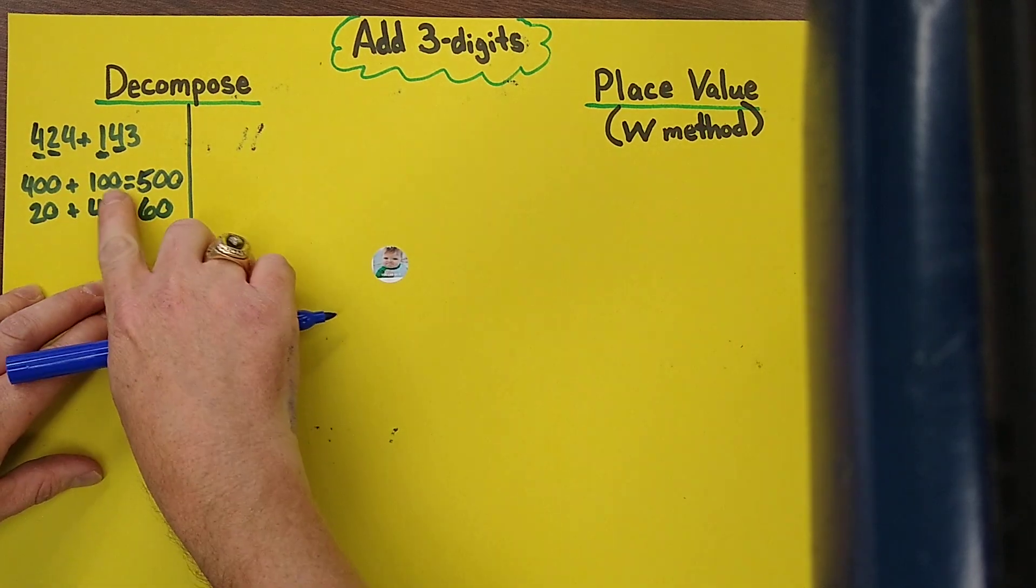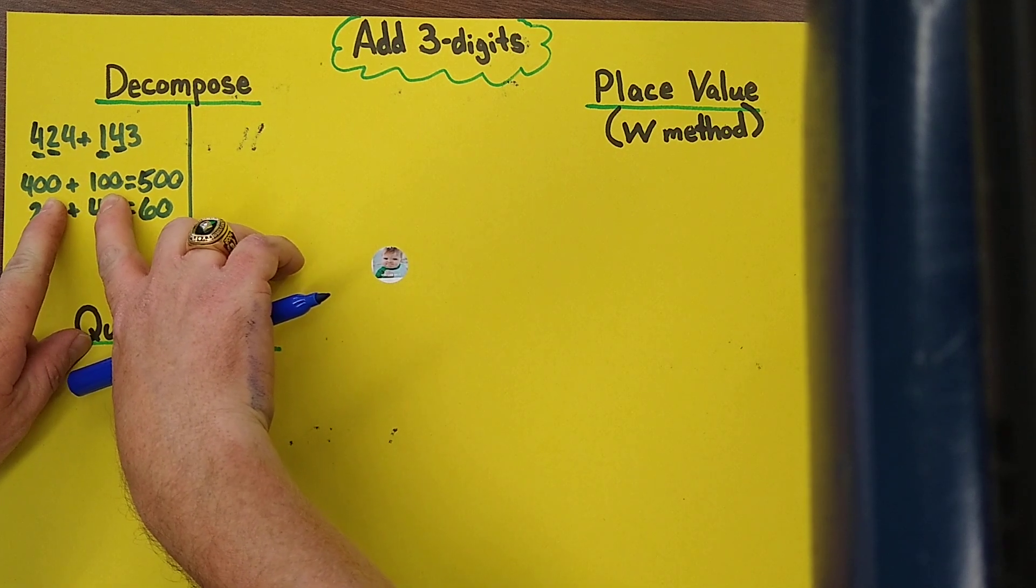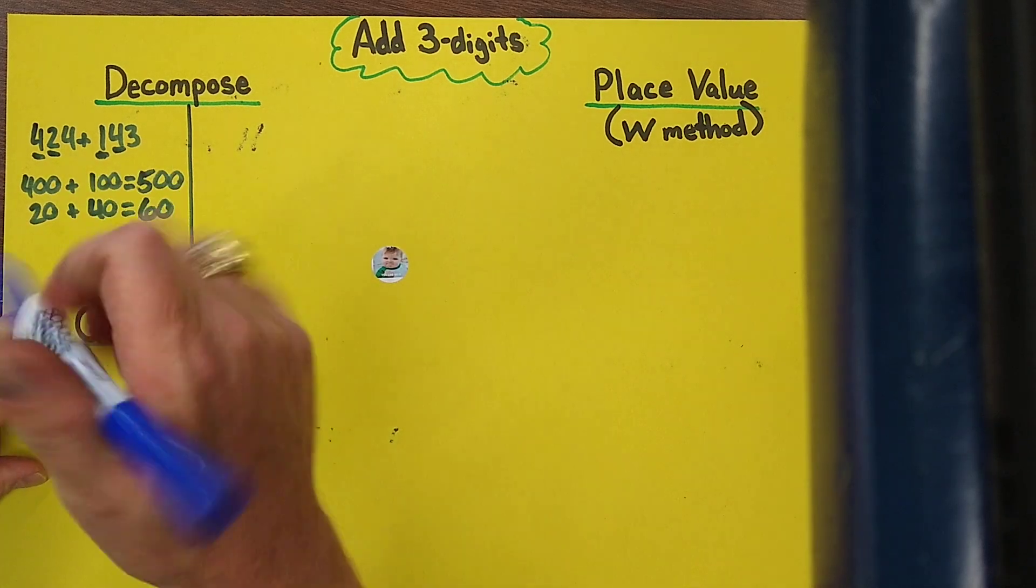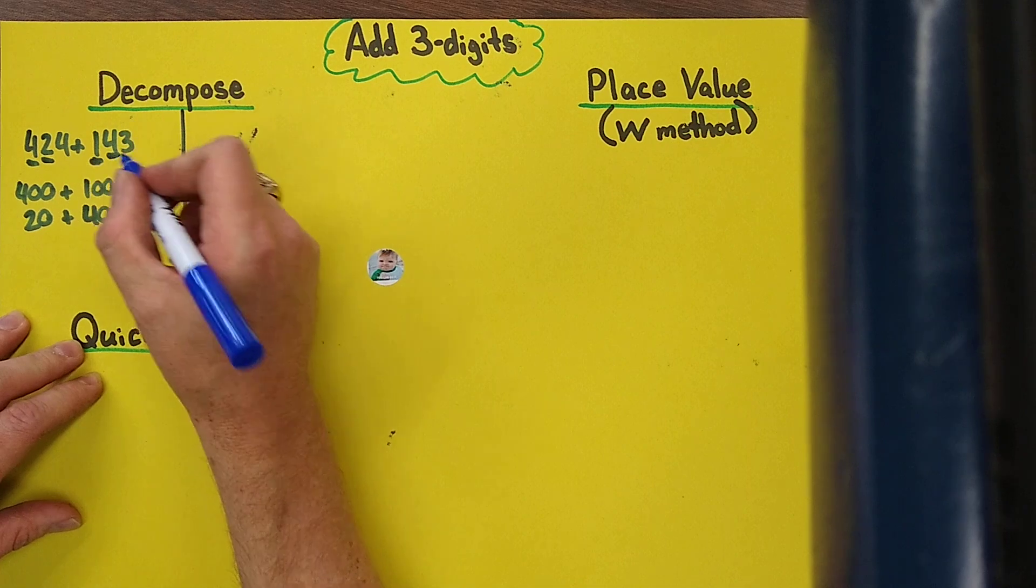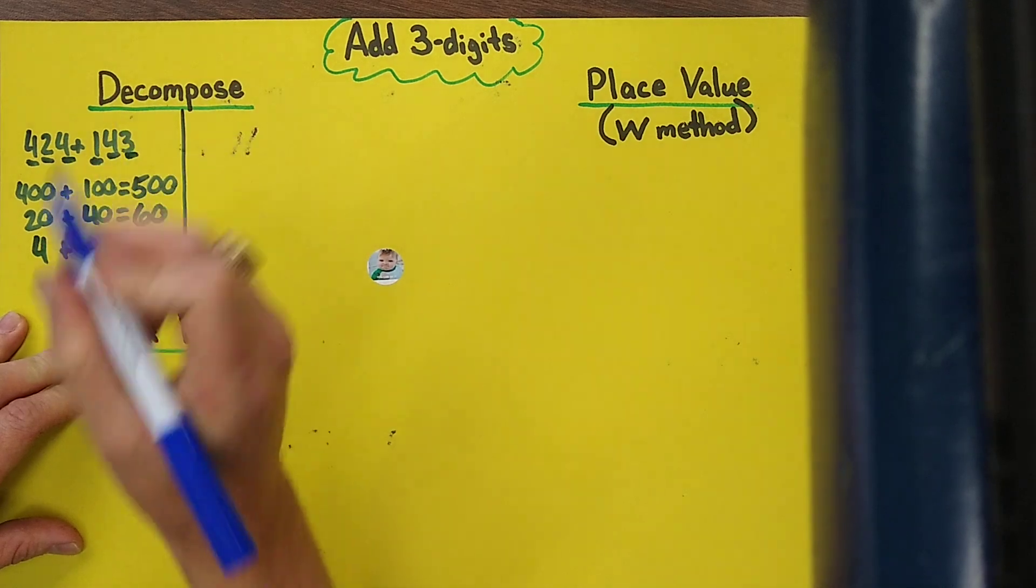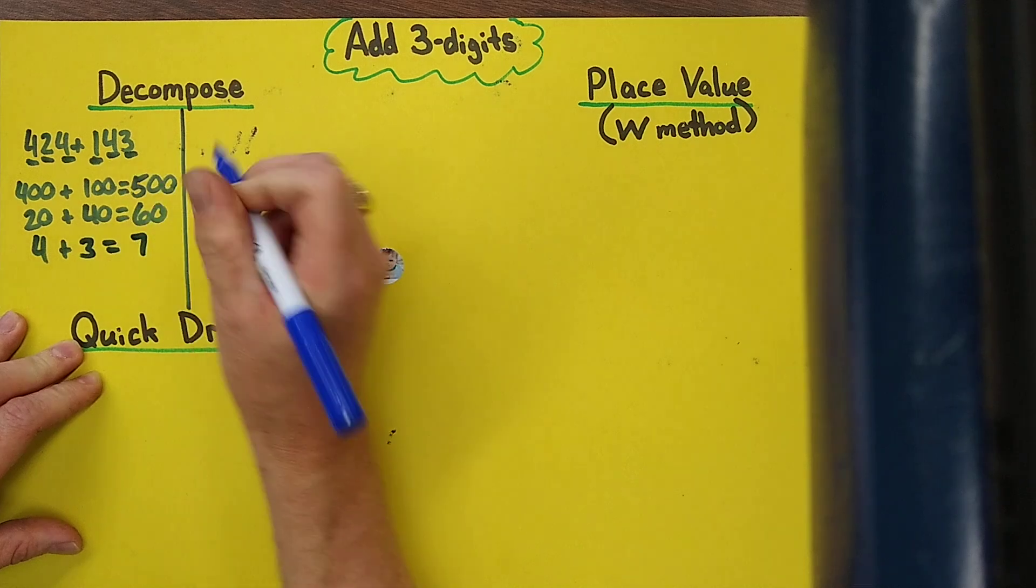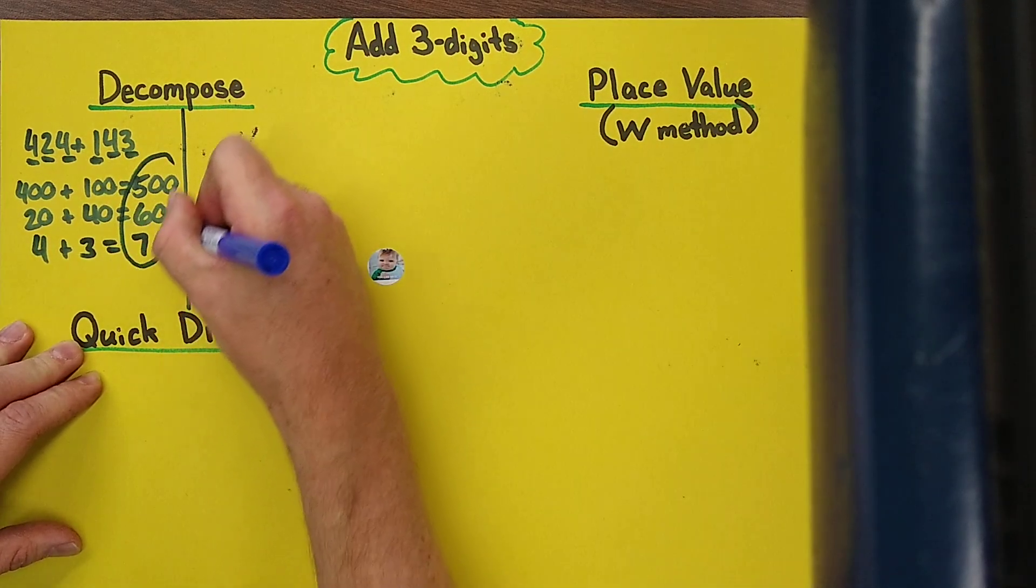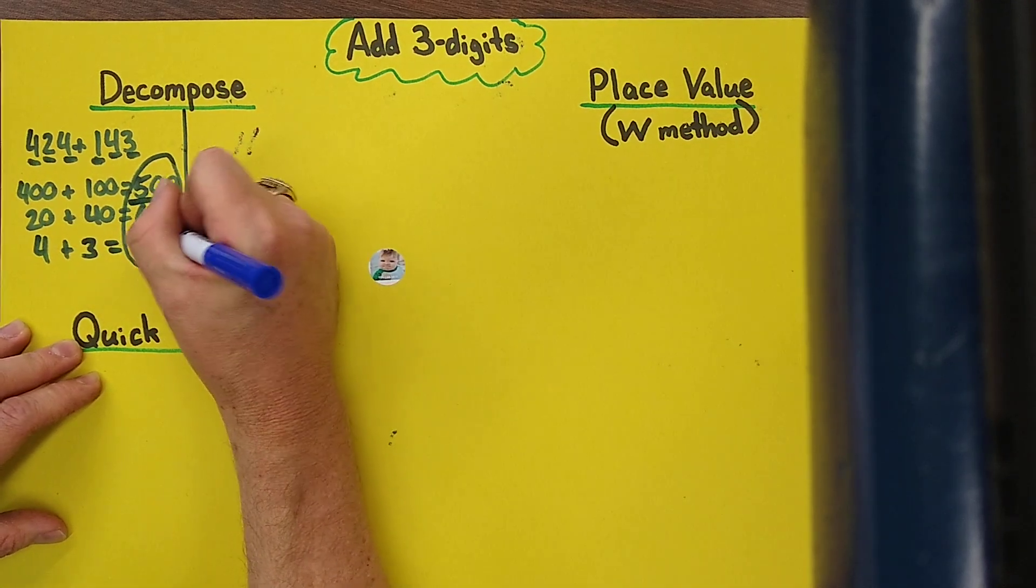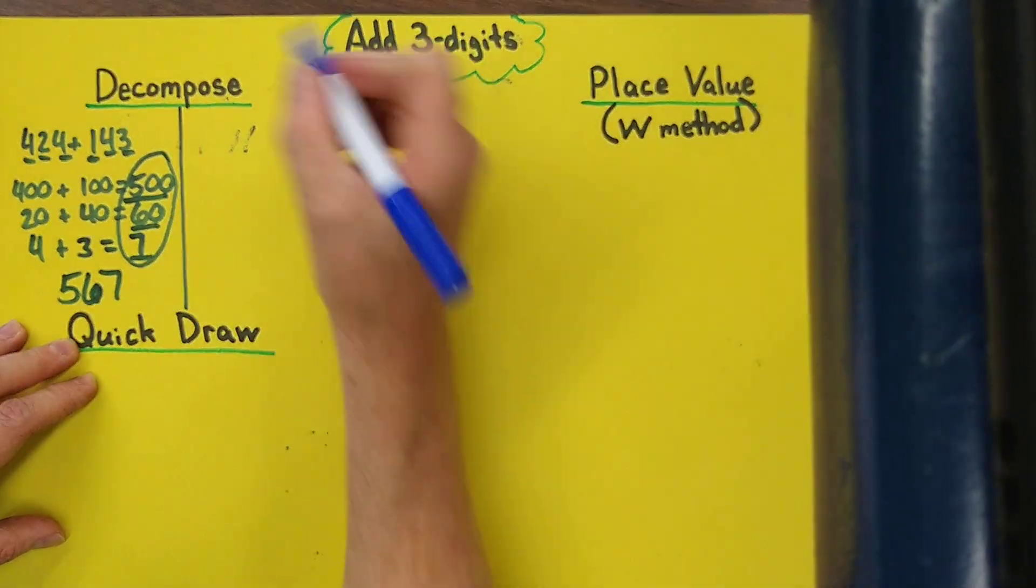Now an easy way if you're not sure about 20 and 40, cover up your zeros and look at the basic fact of 2 plus 4 and that will give you 6, so the answer would be 60. And finally our ones place, 4 plus 3 gives you 7. And finally when we're done we're going to recompose it by putting them back together again and you really can hear it when you read it: 567. So our final answer is 567, and on that one there was no regrouping.